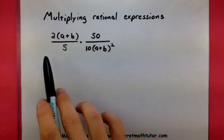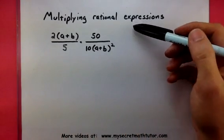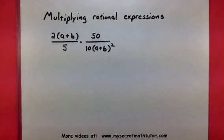Look at the example I have here. I have 2 times a plus b divided by 5, and that's being multiplied by 50 divided by 10 times a plus b squared. We're going to simplify this and then go ahead and multiply anything that's left over.